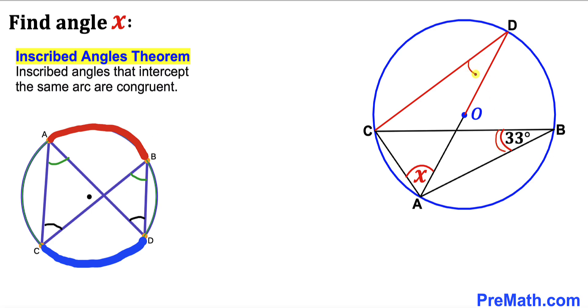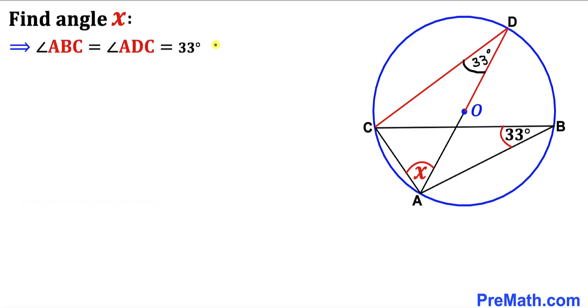They both intercept arc AC, so if this angle is 33 degrees, this angle has to be 33 degrees as well. Therefore, both angles ABC and ADC are equal to 33 degrees.